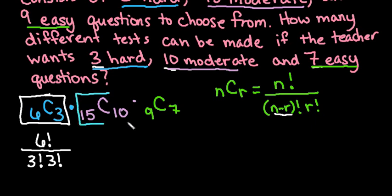And then moving into the next one. This one we would set up as 15 factorial over 15 minus 10 factorial. So that would be 5 factorial. And then we would have r factorial which is 10. So I just did the math in my head to get the 5. So 15 minus 10 gives me 5.